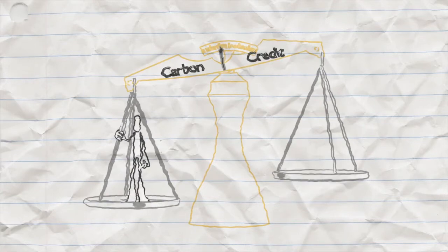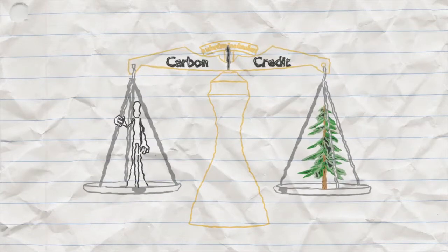Everybody emits carbon dioxide so anybody can buy carbon credits. Any company, community, or individual can buy enough credits to neutralize all of their carbon dioxide emissions thus becoming 100% carbon neutral.